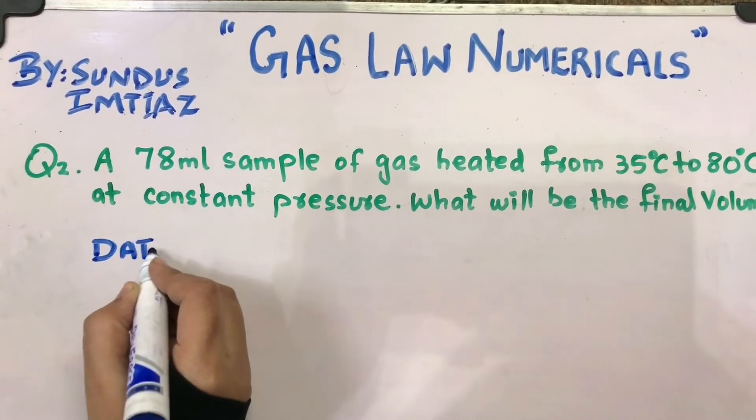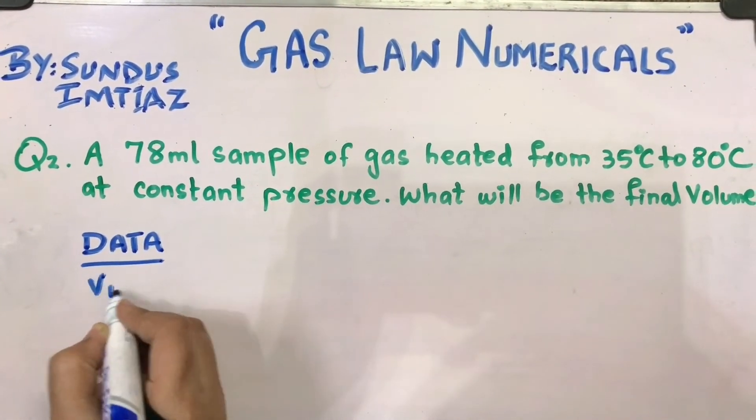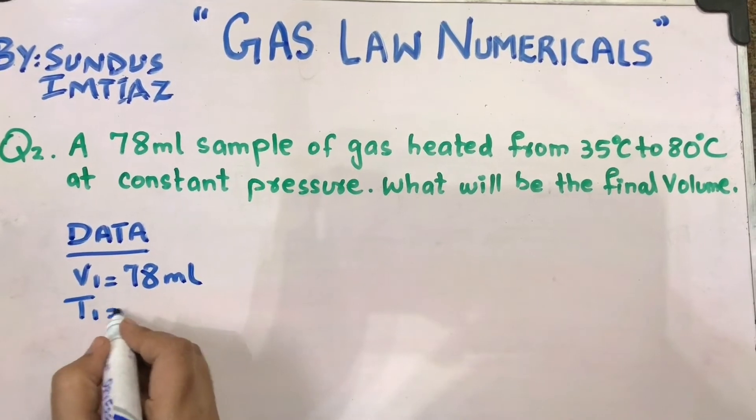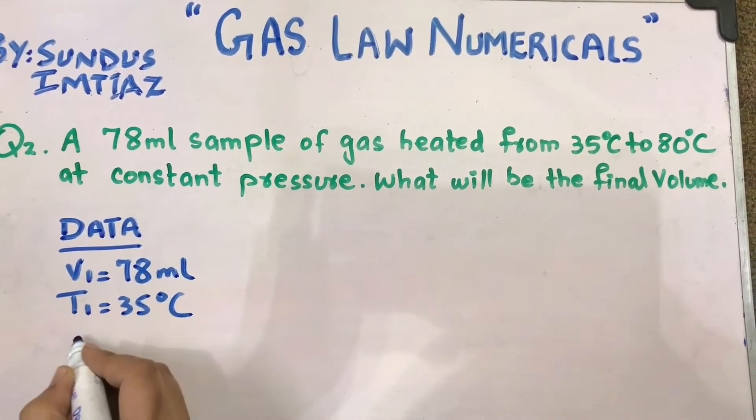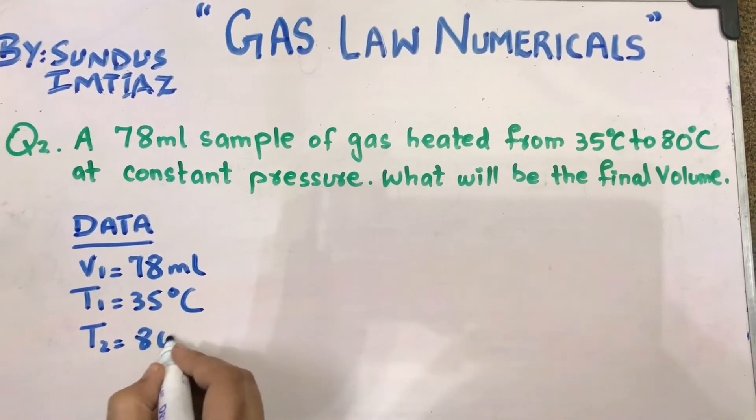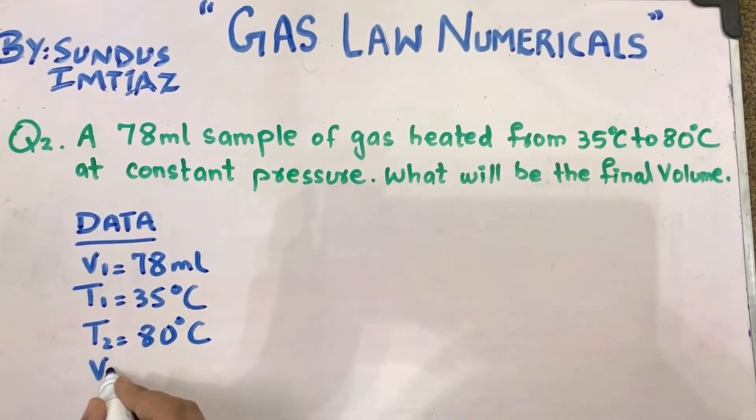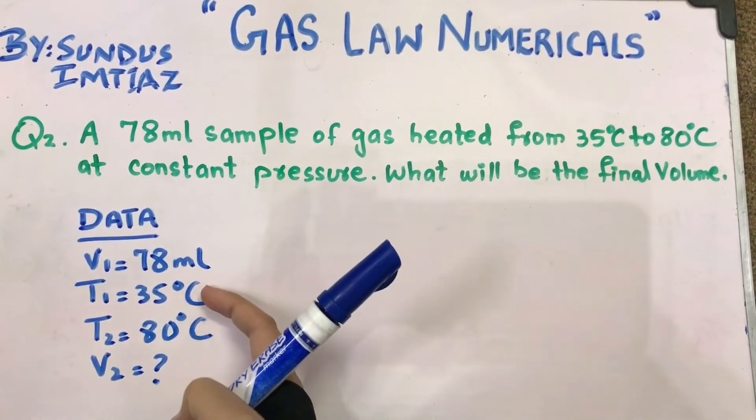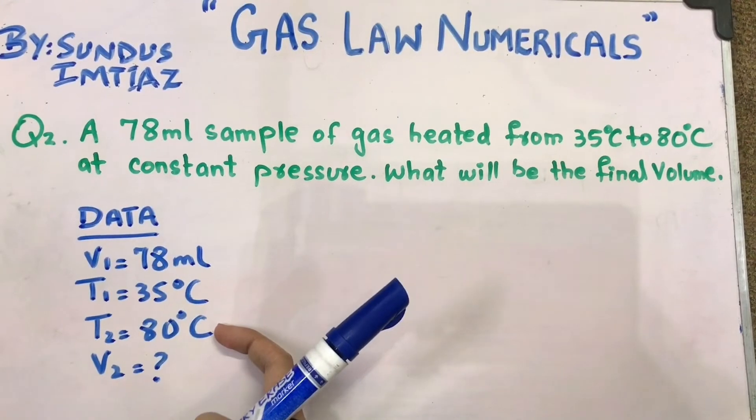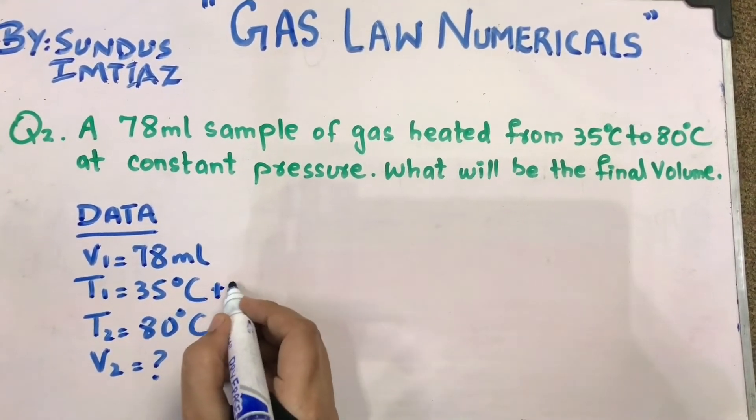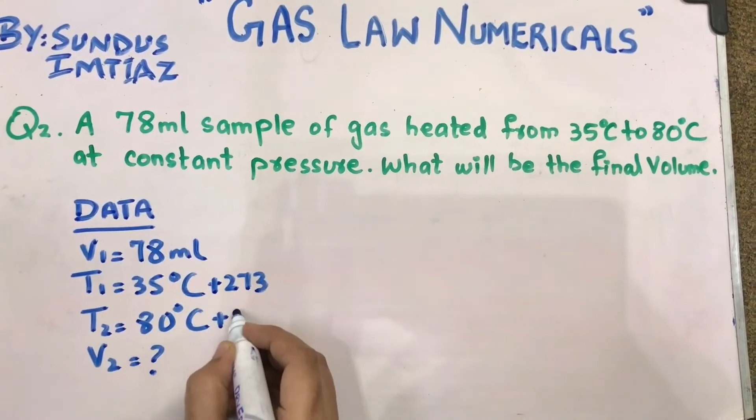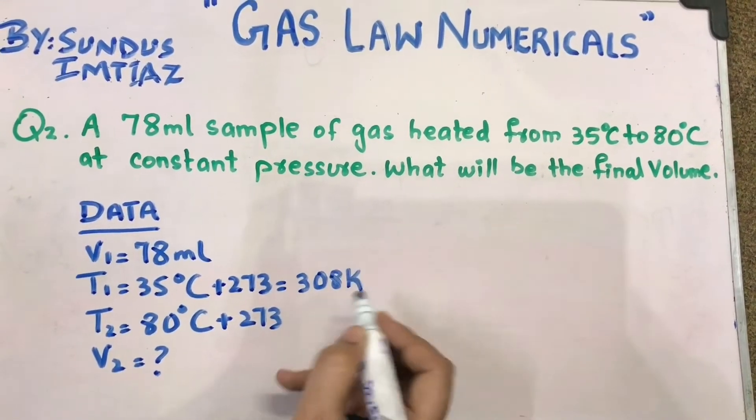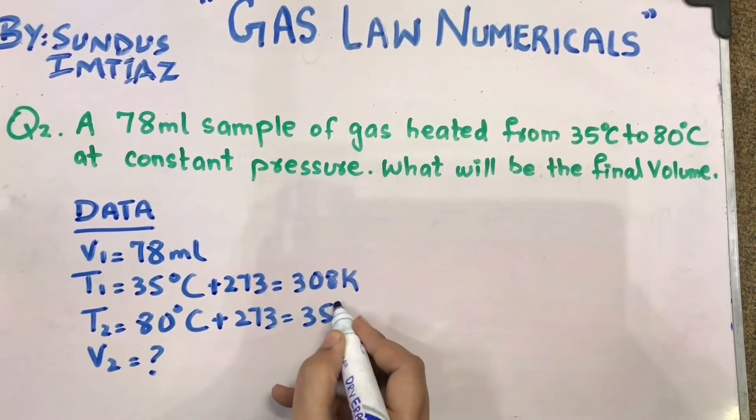Let's make the data. We have V1 that is 78 ml. We have T1 that is 35 degree centigrade. We have T2 that is 80 degree centigrade, while we have to find V2, the final volume. Convert these degree centigrade by adding 273. You will get 308 Kelvin and 353 Kelvin.